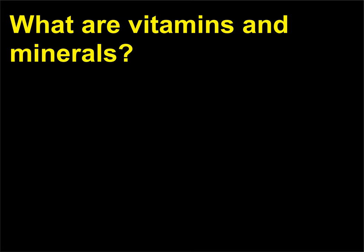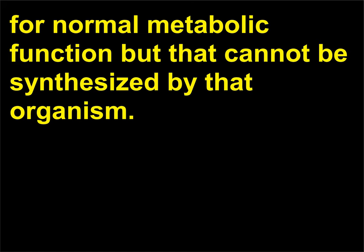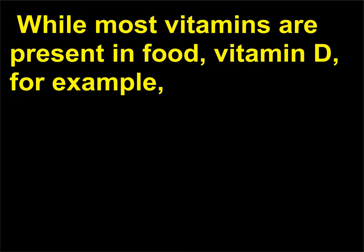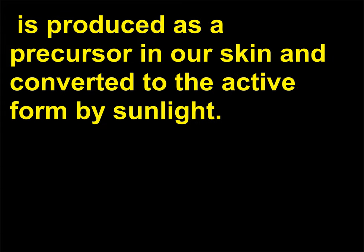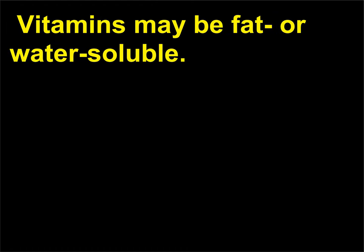What are vitamins and minerals? A vitamin is an organic, non-protein substance that is required by an organism for normal metabolic function but that cannot be synthesized by that organism. In other words, vitamins are crucial molecules that must be acquired from outside sources. While most vitamins are present in food, vitamin D, for example, is produced as a precursor in our skin and converted to the active form by sunlight. Minerals, such as calcium and iron, are inorganic substances that also enhance cell metabolism. Vitamins may be fat or water-soluble.